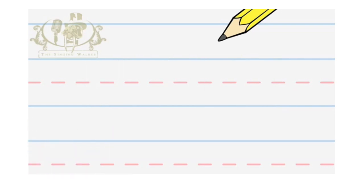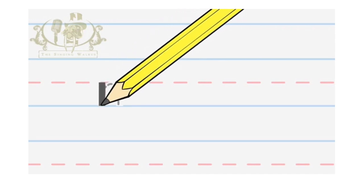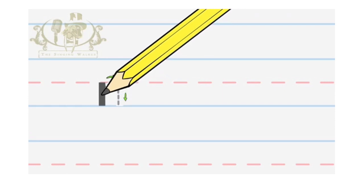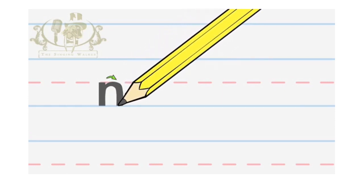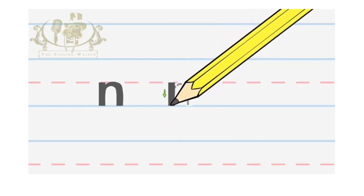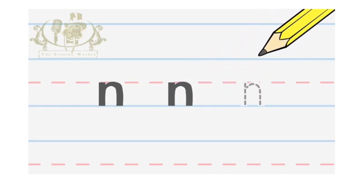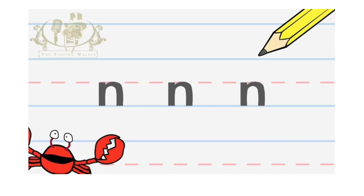Great job. Now, we're going to write the lowercase N — that's the small N. Start in the middle and make a line down. Let's try it again. Down. Up and around to the bottom. Now, you try. Now, check if you did it right. Well done. Now, you know how to write the letter N.